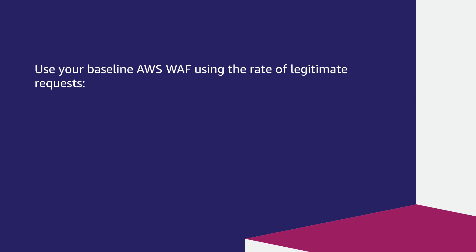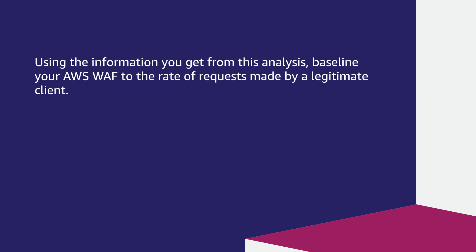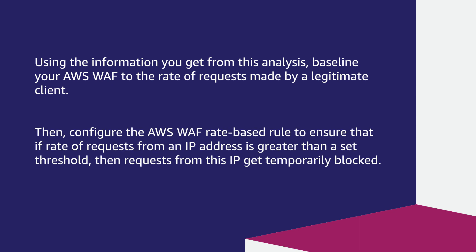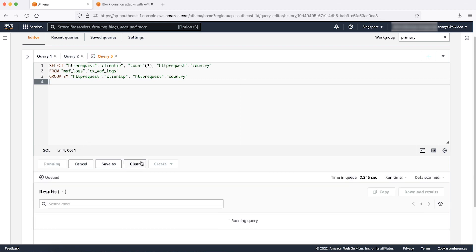Use your baseline AWS WAF using the rate of legitimate requests. Perform an analysis of your traffic to identify the number of requests made by legitimate client IP addresses using Amazon Athena or QuickSight on AWS WAF logs. Using this information, baseline your AWS WAF to the rate of requests made by a legitimate client. Then configure the AWS WAF rate-based rule so that if the rate of requests from an IP address exceeds a set threshold, requests from that IP get temporarily blocked.